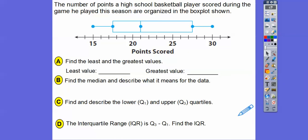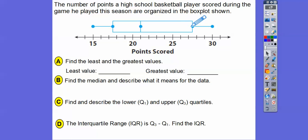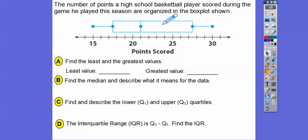So here's a box plot. The smallest number is 15, and the biggest number is 30. Quartile one is about 17.5, and quartile three is about 27.5. Here's the middle number, which means 50% is below that number. This is 25%, 25%, 25%, and 25% of the numbers — that's what the box and whiskers plot gives us an advantage of.